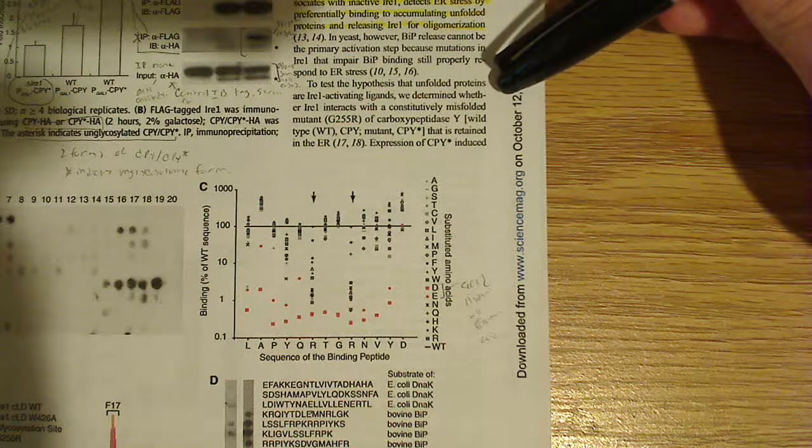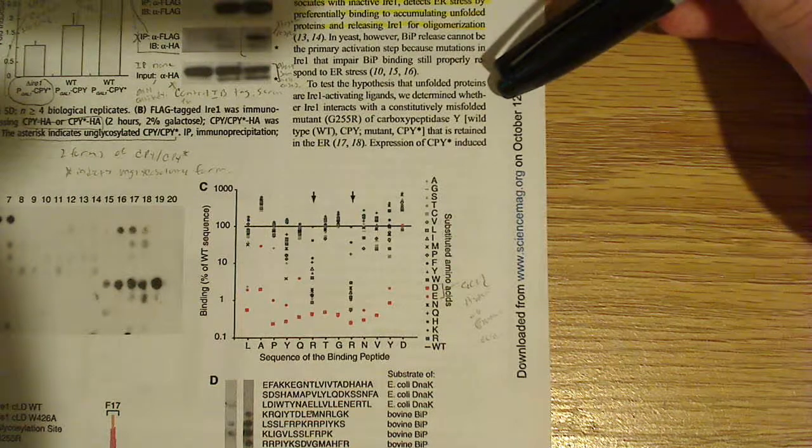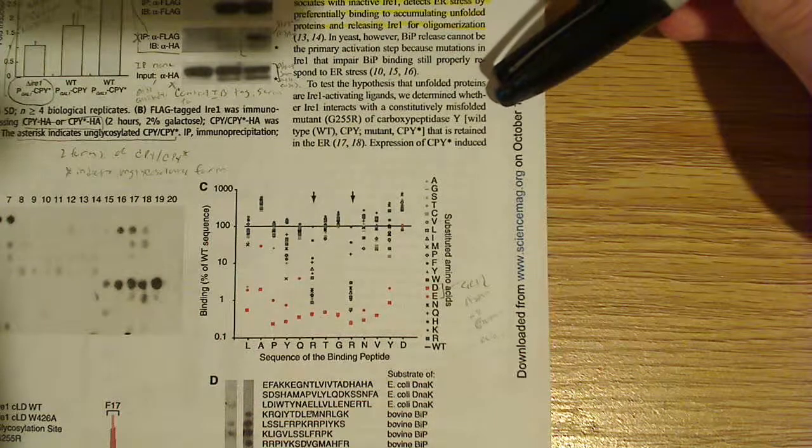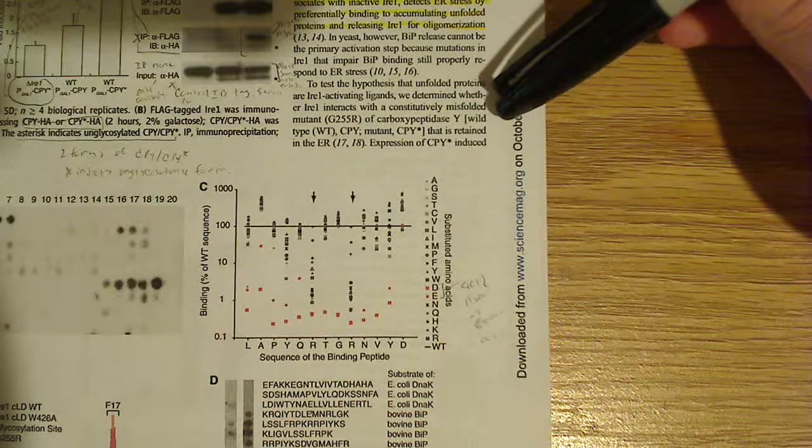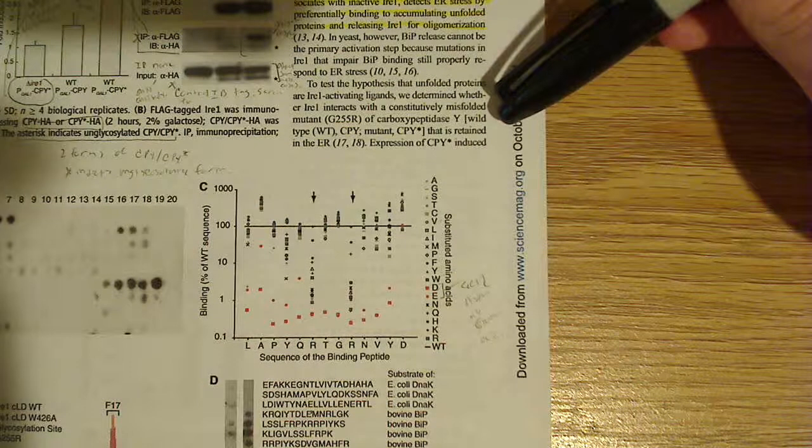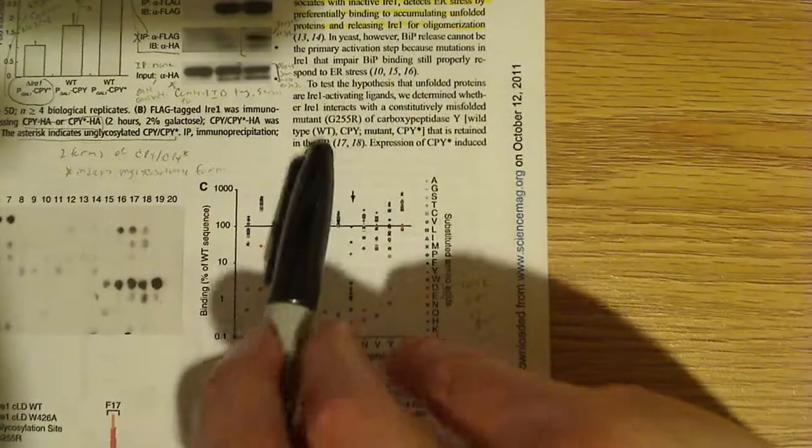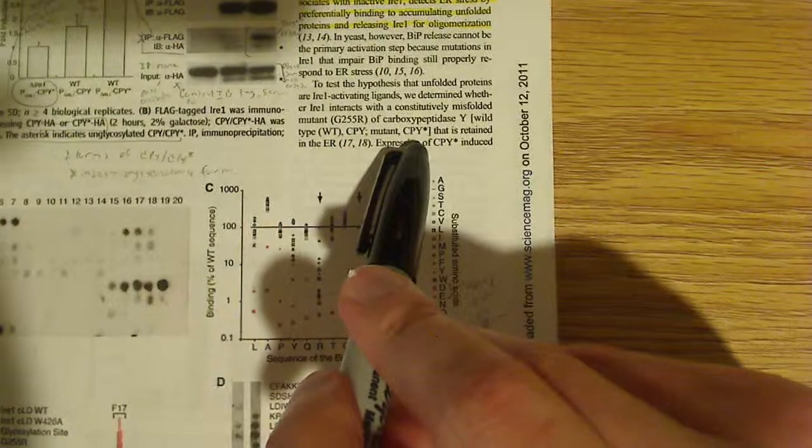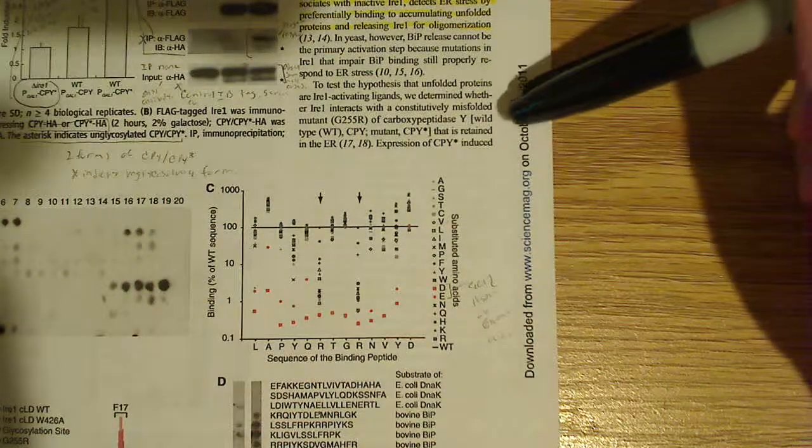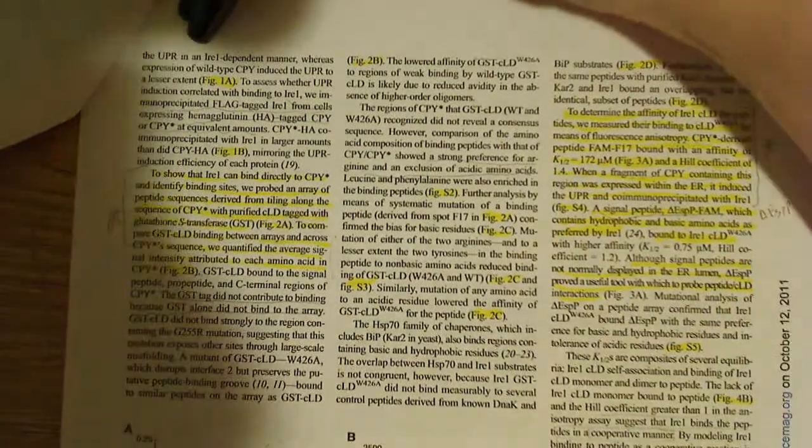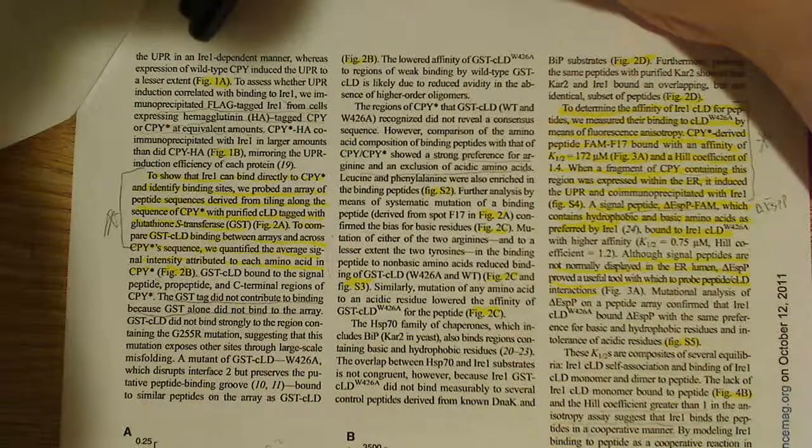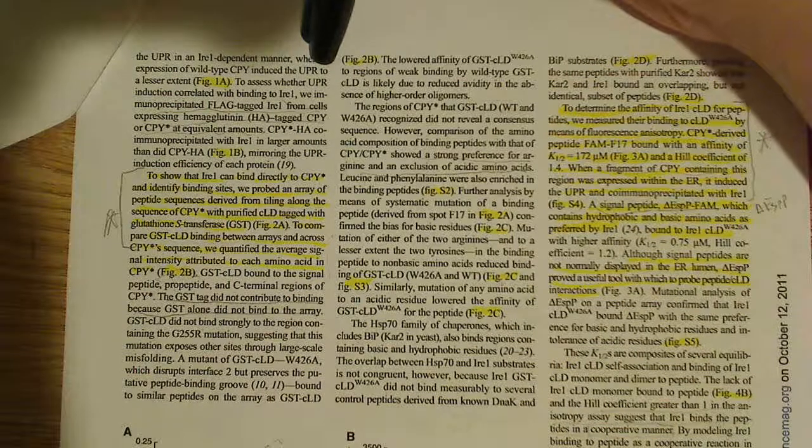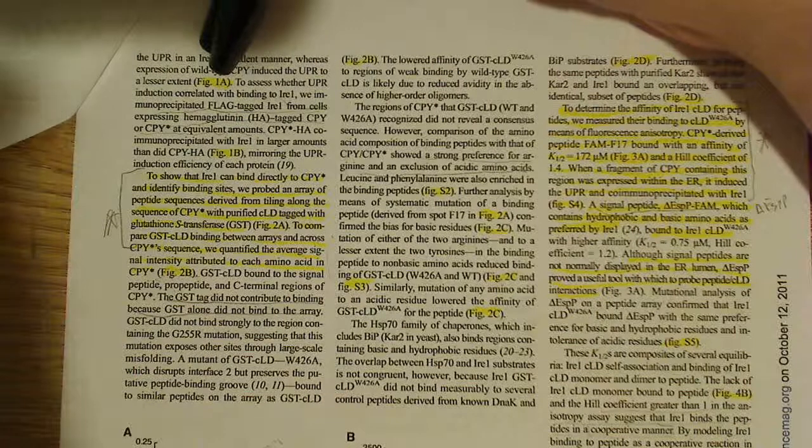But basically, at the bottom here is where they kind of really talk about it, and they start talking about what's going on here. They say that to test the hypothesis that unfolded proteins are IRE1 activating ligands, we determine whether IRE1 interacts with a constitutively misfolded mutant of carboxypeptidase Y. So CPY, that's basically what they call it, CPY, and they test it with the wild type, WT means wild type, CPY, and mutant, which is CPY star, has an asterisk next to it. And this is retained in the endoplasmic reticulum expression of CPY induced the UPR, so that's the unfolded protein response signal. In an IRE dependent manner, whereas expression of the wild type CPY induced the UPR to a lesser extent.